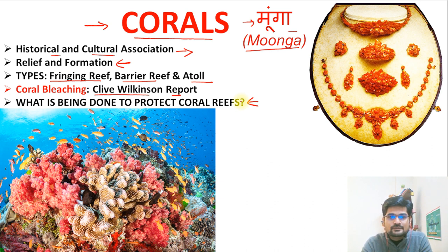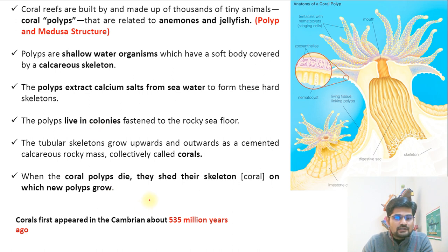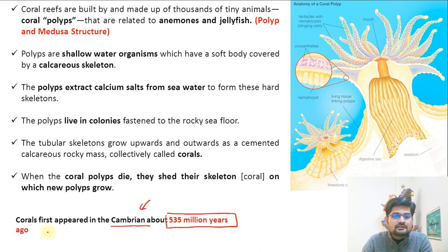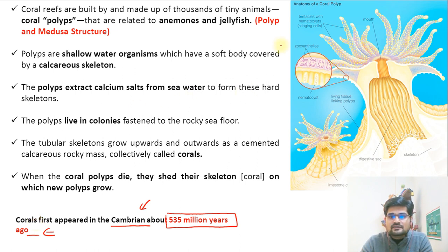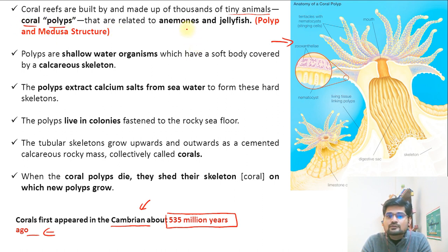Going by history, corals first appeared during the Cambrian period, about 535 million years ago according to the geological time scale. If you understand the anatomy of coral reefs, they are basically built by thousands of tiny animals called coral polyps. Remember, these are related to anemones and jellyfish — so the key point is that these are not plants but animals.